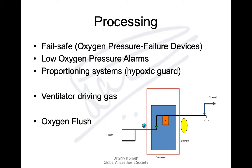There can be second-stage regulators to further reduce pressure within the machine. There are devices which prevent delivery of a hypoxic mixture — these are called fail-safe devices or oxygen pressure failure devices. There are alarms for low oxygen pressure, and proportionating systems also known as hypoxia guard, ensuring you cannot deliver nitrous oxide on its own. Modern machines also come with ventilators, and there is an oxygen flush for high-flow situations such as laryngospasm.